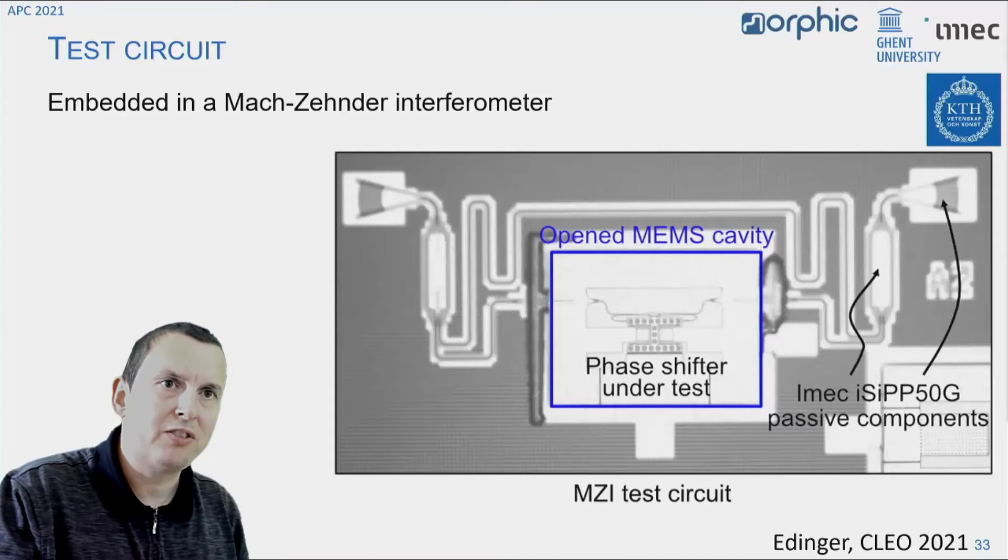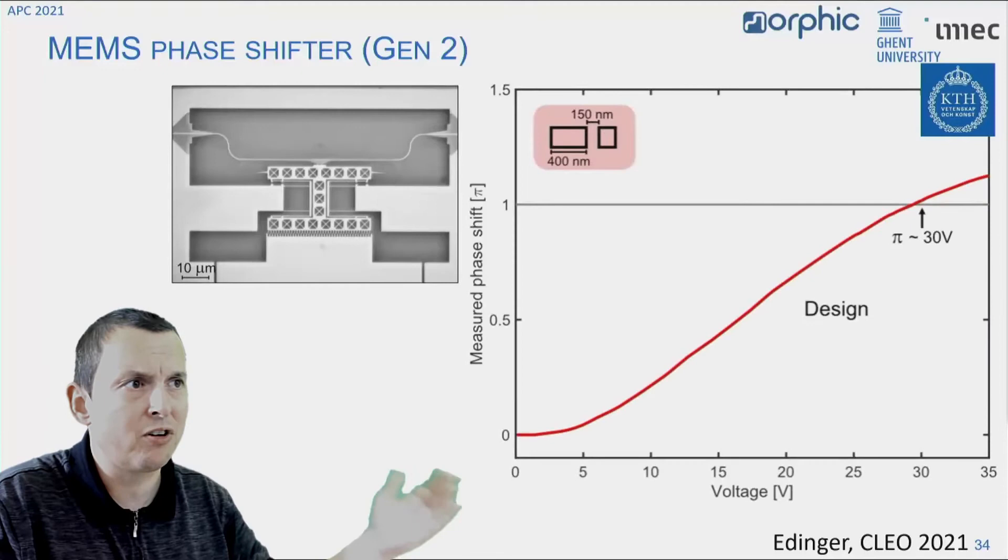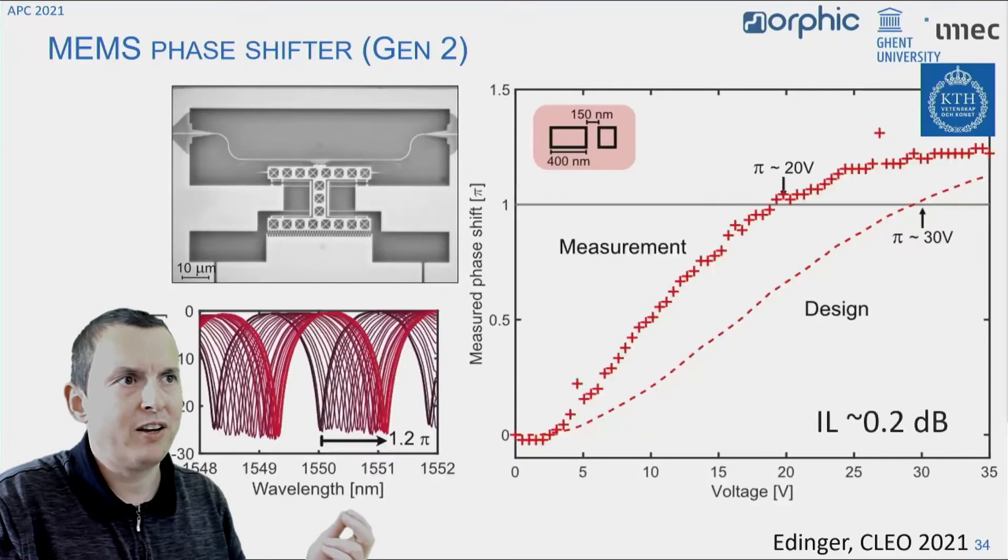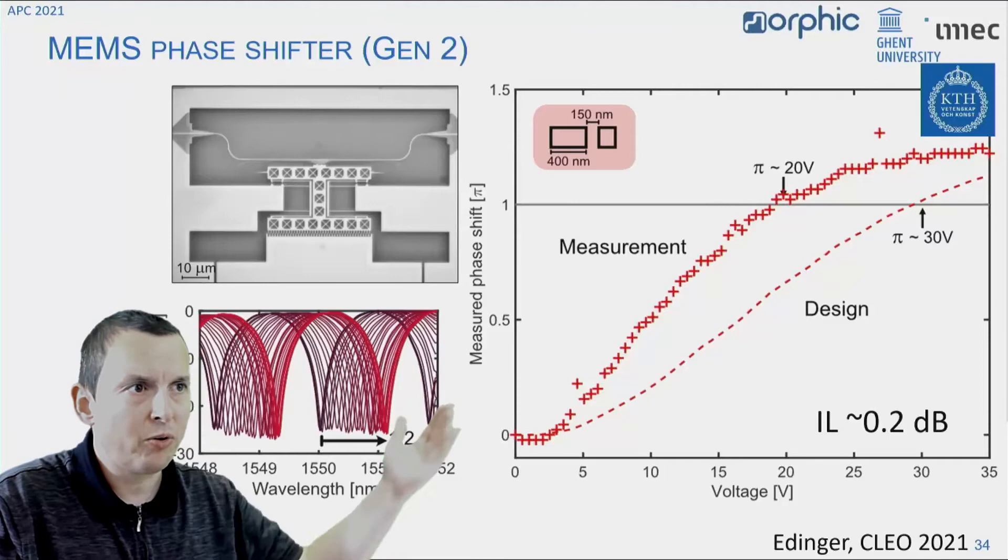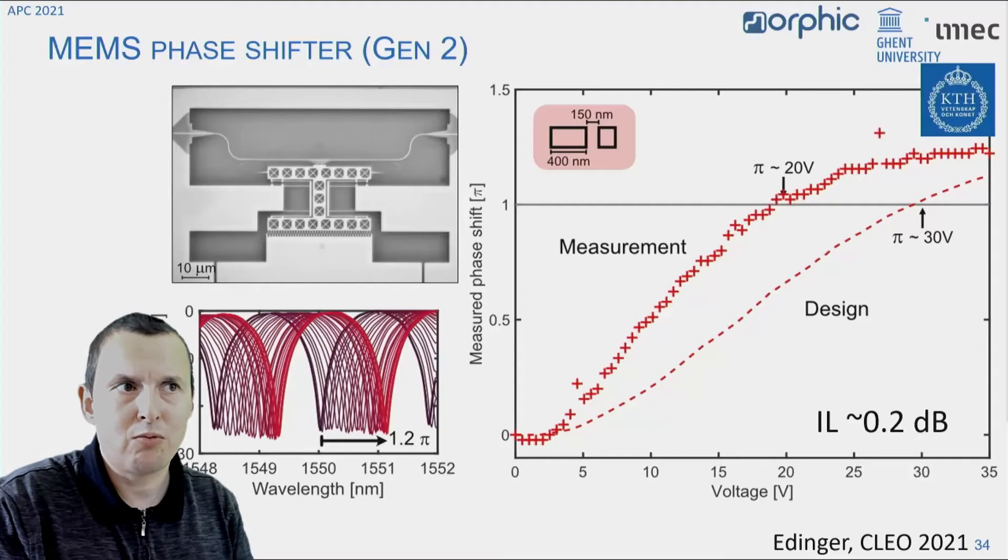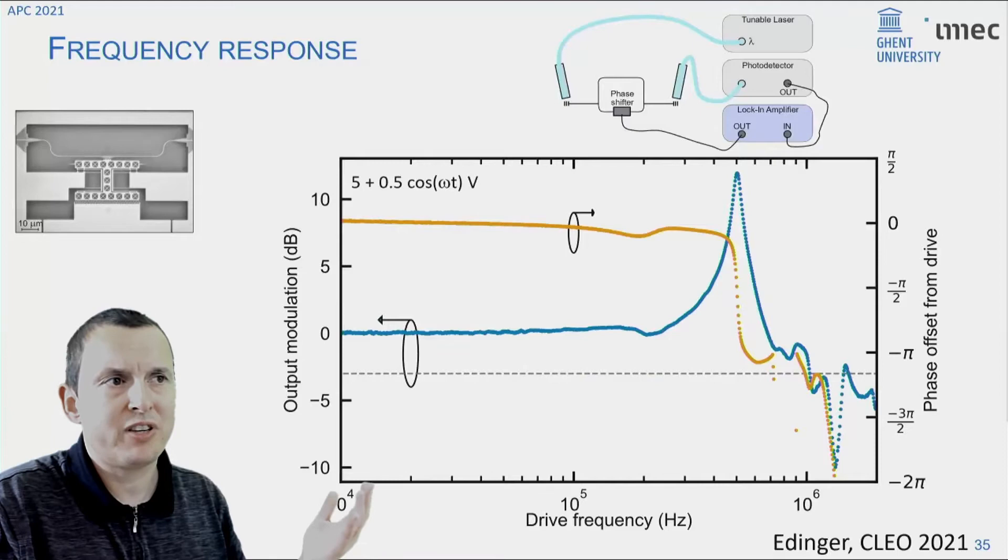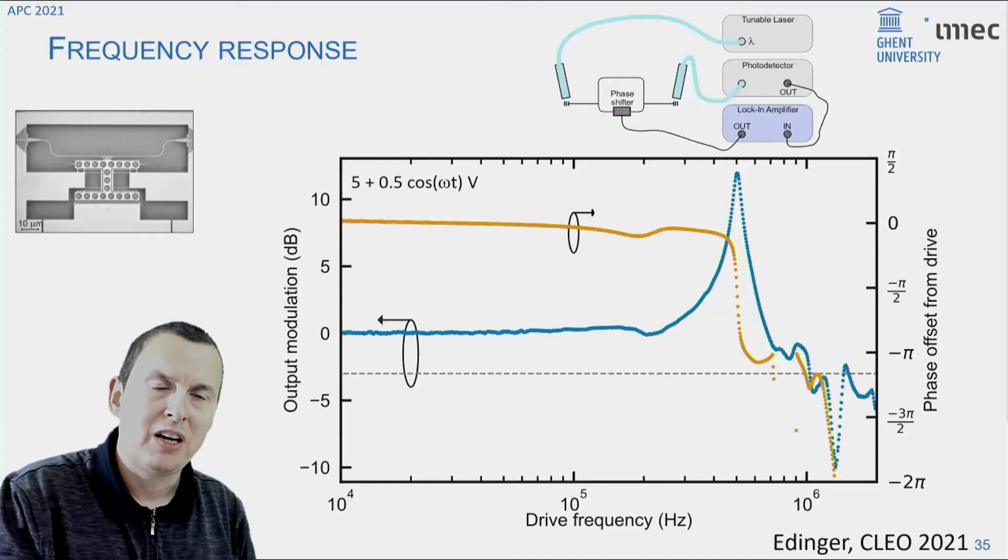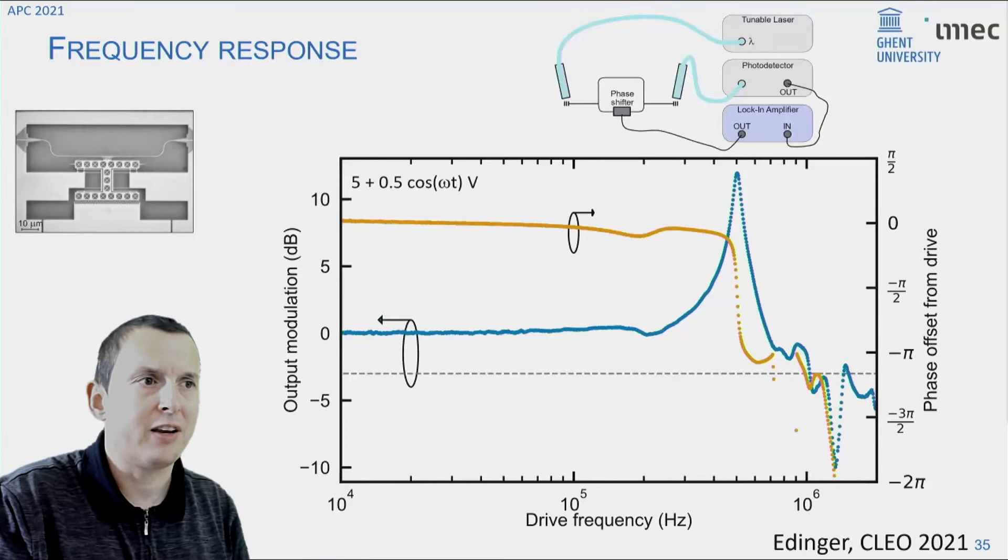So this phase shifter would look a bit like this. You have your waveguides where your light is just going from input to output. And then you have a thin beam of silicon sitting right next to it, suspended by these folded springs and on a movable shuttle that is actuated by the comb drive. So if you want to characterize such a phase shifter, well, the easy way to characterize a phase shifter is embedding it into a Mach-Zehnder interferometer. And here you already see one of the challenges because this phase shifter is exposed to air, but all the other components in the interferometer are encapsulated in oxide.